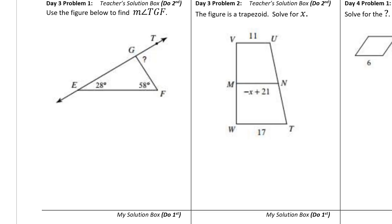Here's the answer for day three problem one. Use the figure below to find the measure of angle TGF. So angle TGF is located here from T to G to F. It's this angle that has the question mark written in it.